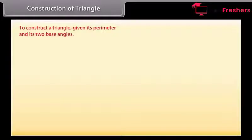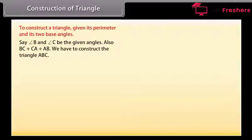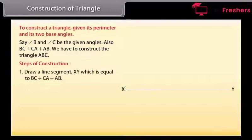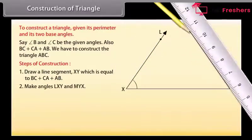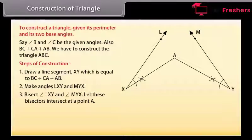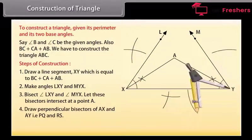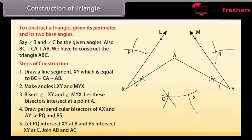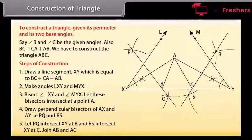Now we will construct a triangle given its perimeter and its two base angles, say angle B and angle C. Also given is BC plus CA plus AB. Steps of construction: Draw a line segment XY equal to BC plus CA plus AB. Make angles LXY and MYX equal to the given angles. Bisect angle LXY and angle MYX. Let these bisectors intersect at a point A. Draw perpendicular bisectors of AX and AY, that is PQ and RS. Let PQ intersect XY at B and RS intersect XY at C. Join AB and AC. Then ABC is the required triangle.